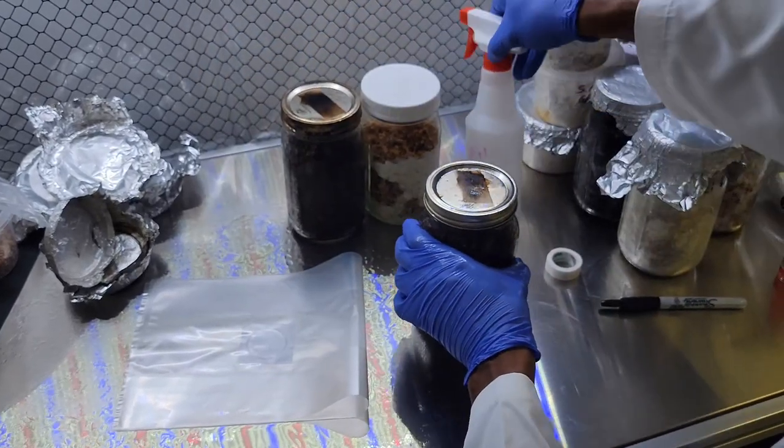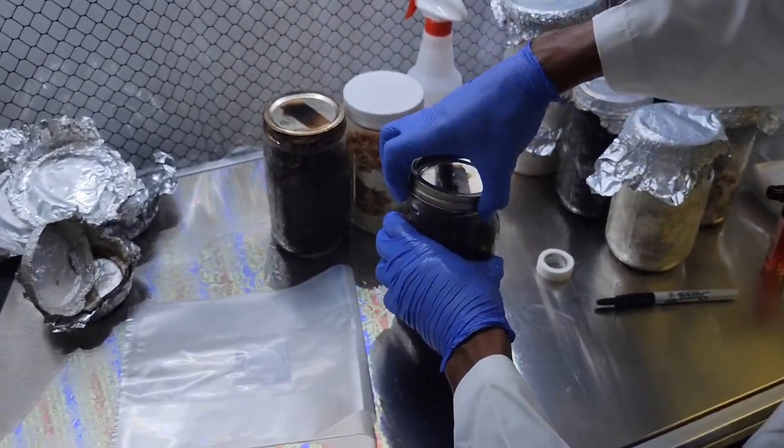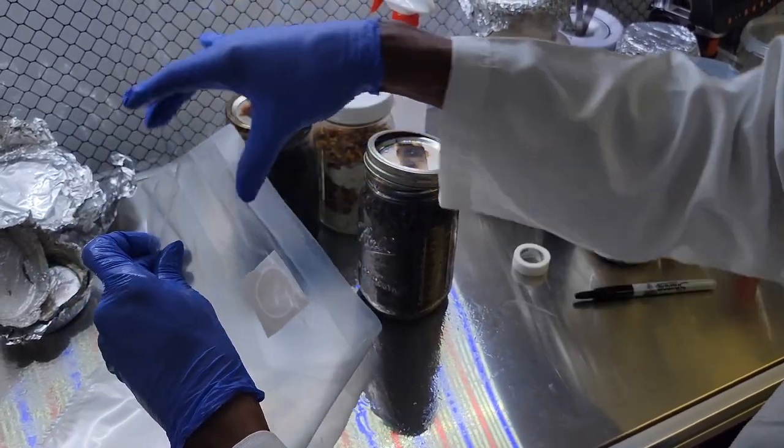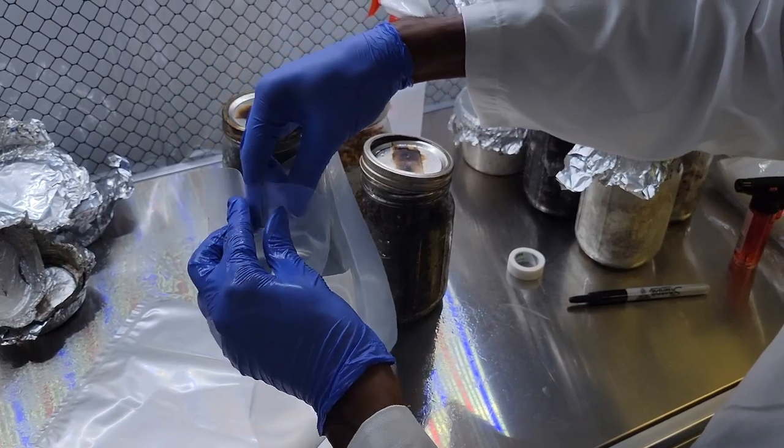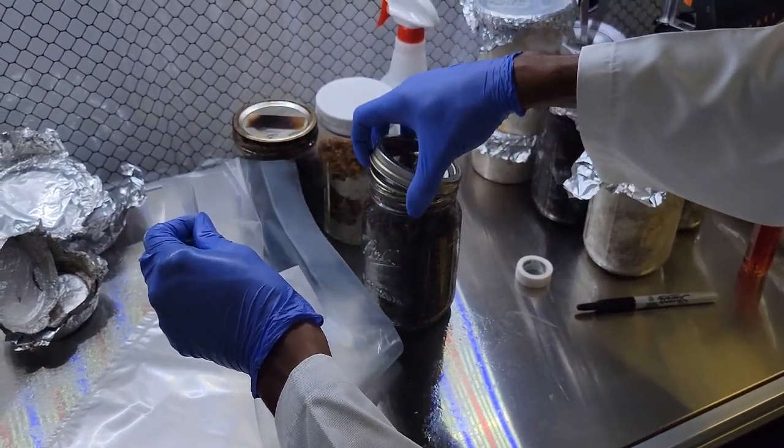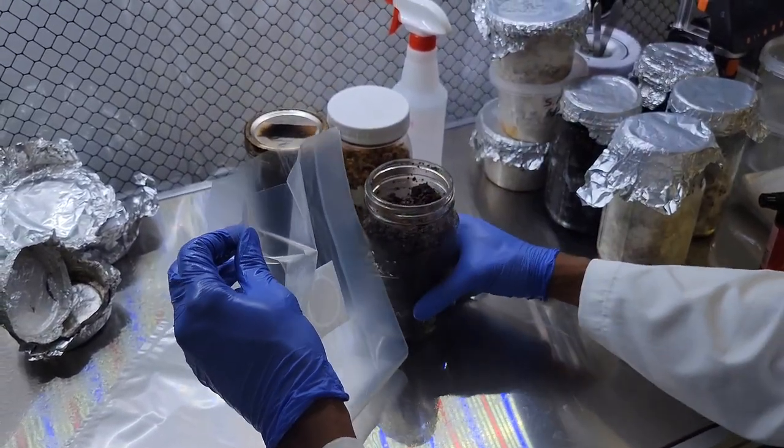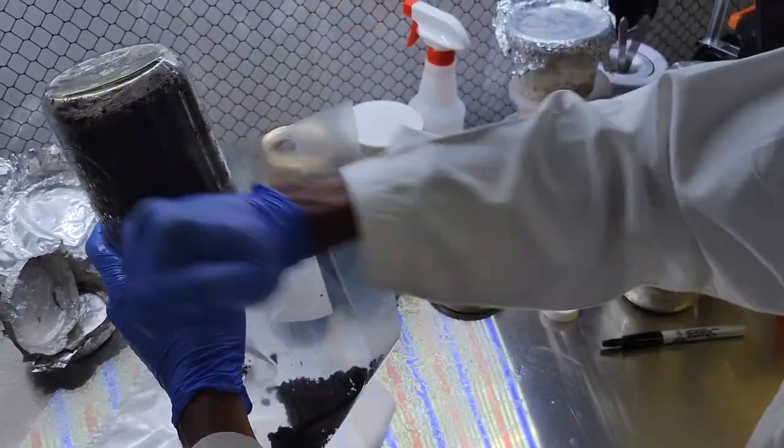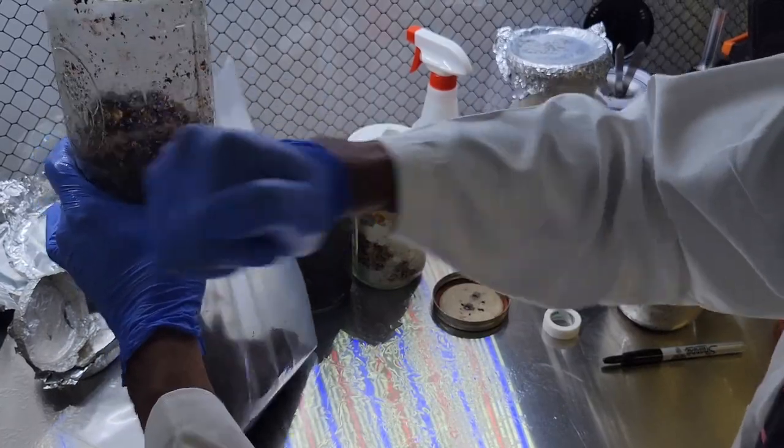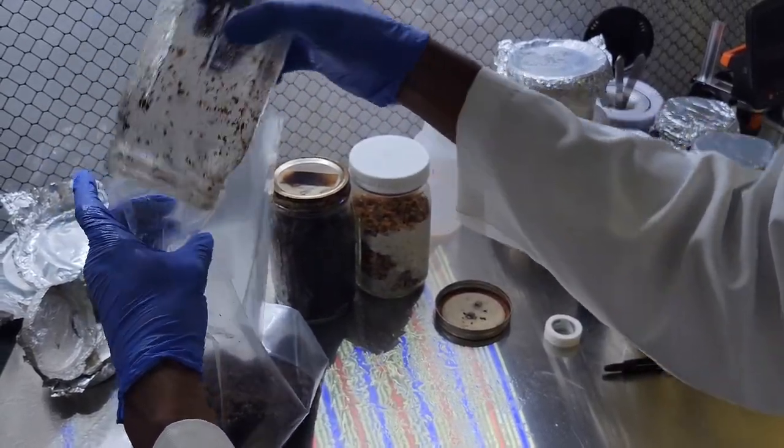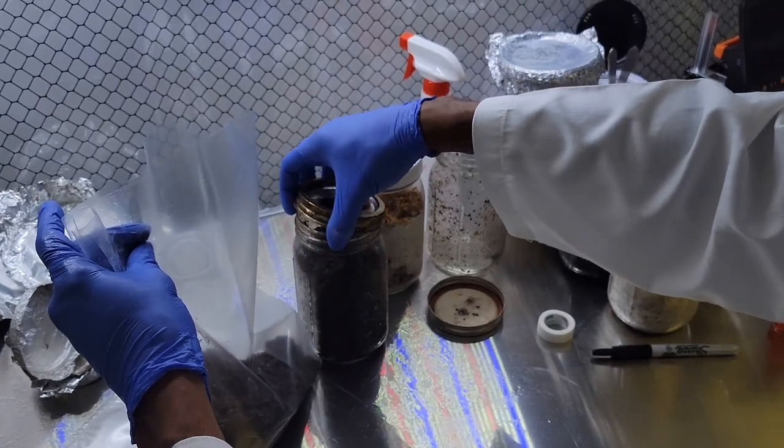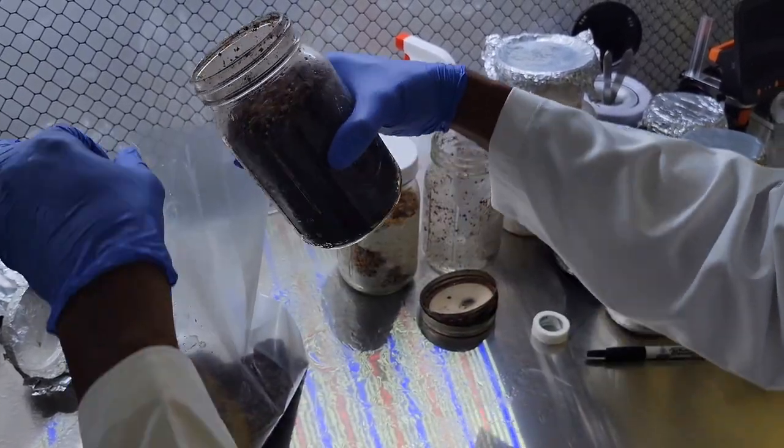When breaking up your grain spawn, because the grain spawn can really stick together if you leave it colonizing for too long, it's best to give it a firm tap. If you don't feel comfortable using your hand, you can use a tennis ball and kind of bounce it on the tennis ball to break it up. Works very well.